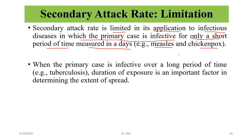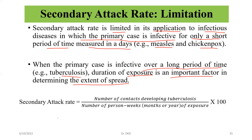When the primary case is infected over a long period of time — for example, tuberculosis — duration of exposure is an important factor in determining the extent of spread. In such cases, secondary attack rate can be calculated as the number of contacts developing tuberculosis divided by the number of person-weeks, months, or years of exposure.